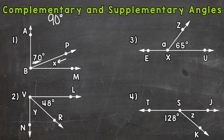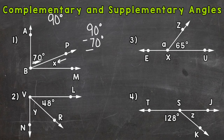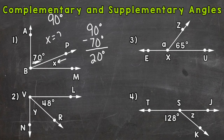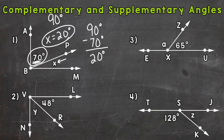What we can do is take the 90 degrees that we want to get to and subtract what we're given — that 70 degrees, which is our known. Subtract these and that difference is what X is going to equal. So 90 degrees minus 70 degrees equals 20 degrees, so X equals 20 degrees. Let's double check: 70 degrees plus 20 degrees gives us 90 degrees. Again, complementary angles add up to equal exactly 90 degrees.